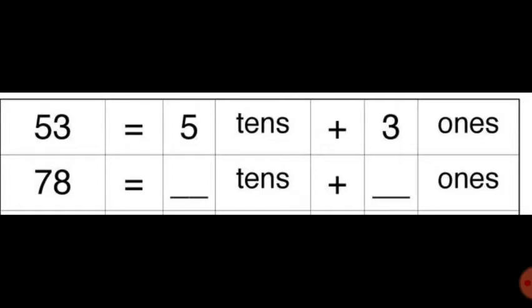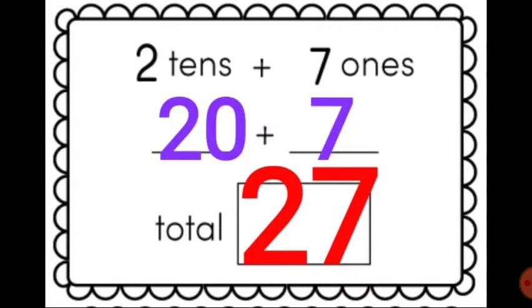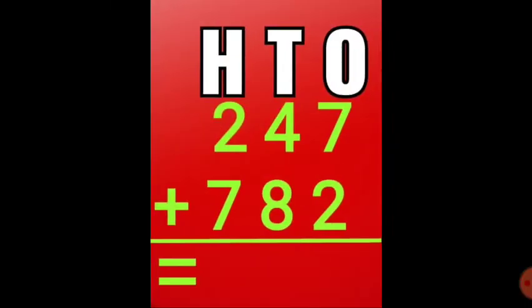53 is equal to 5 tens plus 3 ones. Similarly, 78 is equal to 7 tens plus 8 ones. 7 tens means 70, 8 ones means 8. Next question: 2 tens is 20, 7 ones are 7, which equals 20 plus 7 equals 27. This question is repeated.